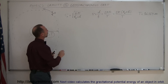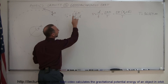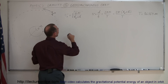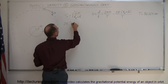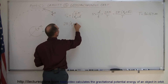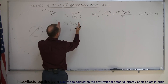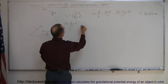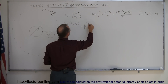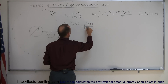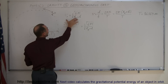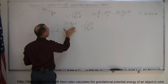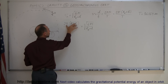Knowing all that, let's find out what h is supposed to be. First, we replace v-orbital with what it equals: 2π times r_e plus h, over the period — that's the orbital velocity — and set that equal to the square root of GM over (r_e + h). We've now taken the orbital velocity equation and set it equal to velocity as distance over time.